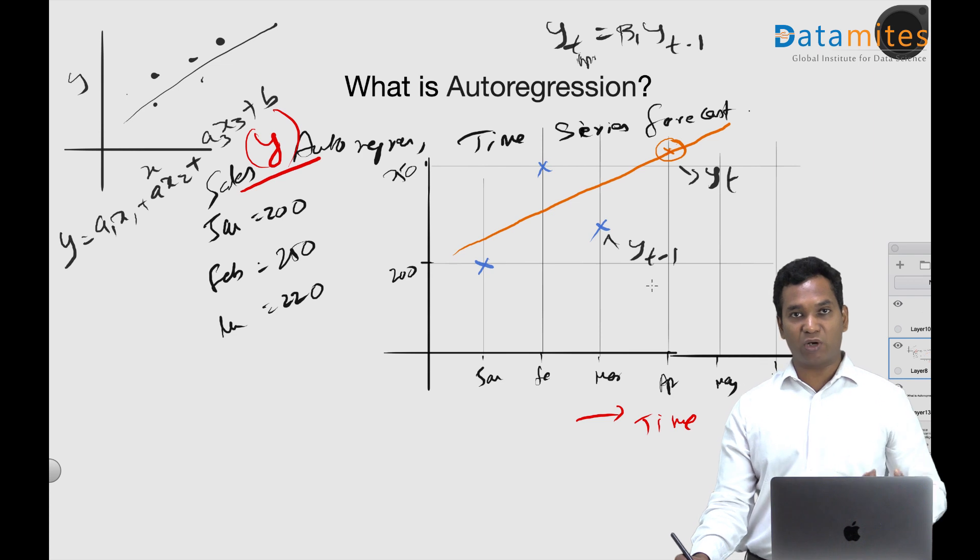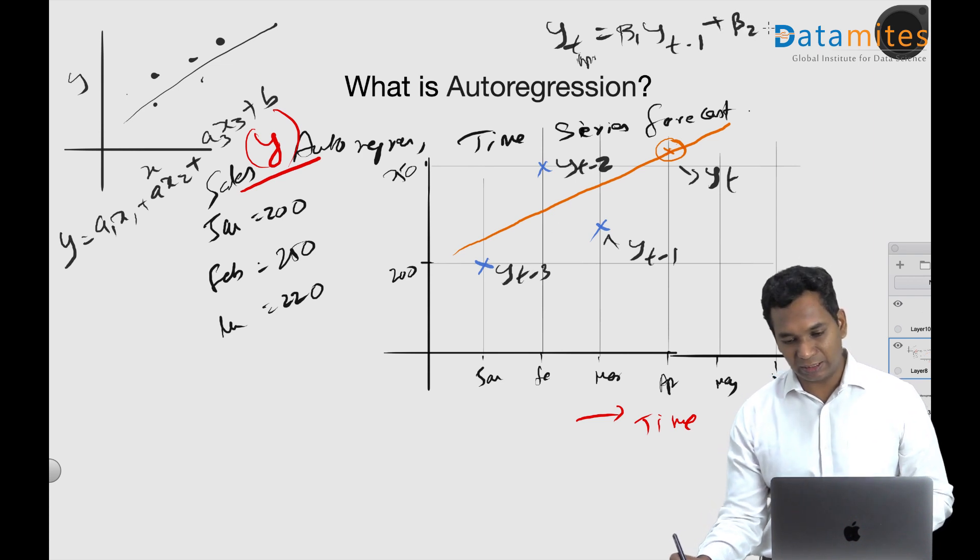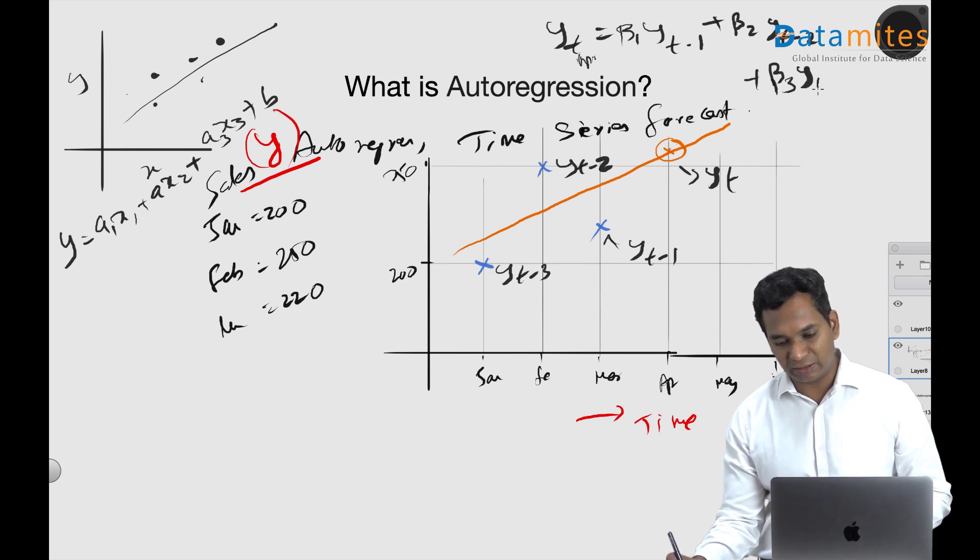In this case, one month before this becomes y of March - the sales of March. This is y of t minus 2, the sales of February. And this is y of t minus 3, the sales of January. So the equation turns to be like this: yt minus 2 plus beta 3 yt minus 3 plus beta 0.